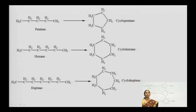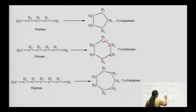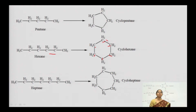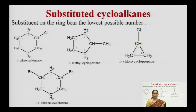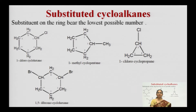Before IUPAC naming, the first step is to identify the ring — how many carbons are in the ring. That ring is built from the same number of carbons as the parent alkane. If it is a 6-carbon ring and all carbons are saturated, it comes from a 6-carbon chain. Simply prefix 'cyclo' to the parent alkane name to get the basic ring name.